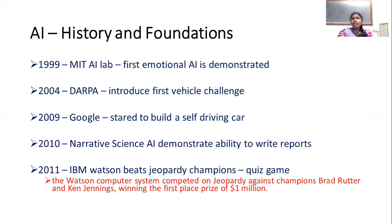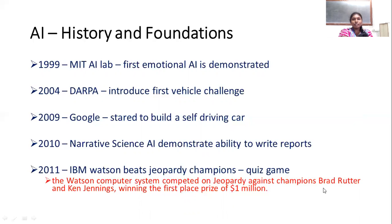In 2004, there was an autonomous vehicle challenge. In 2009, Google started to build self-driving cars. In 2010, Narrative Science demonstrated AI's ability to write reports using software. In 2011, IBM's Watson — a Jeopardy-style challenge — defeated champions Brad and Ken, winning prize money of $1 million.